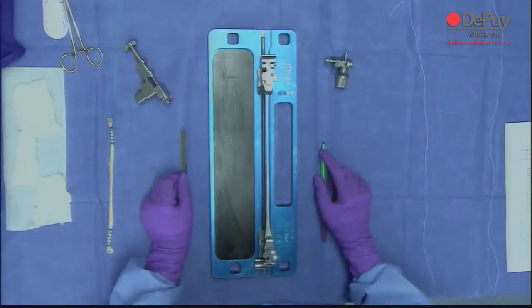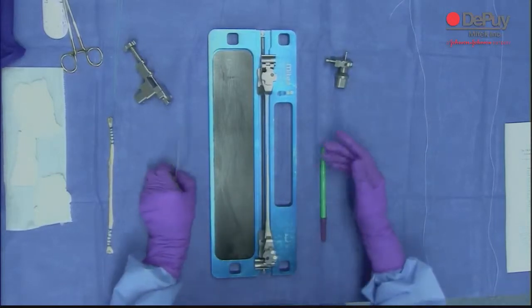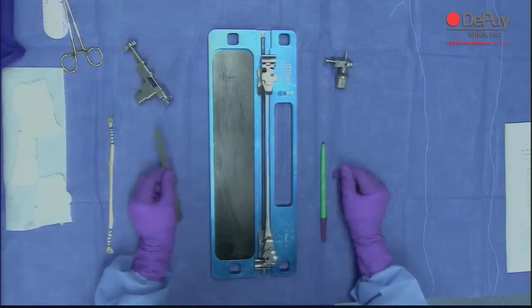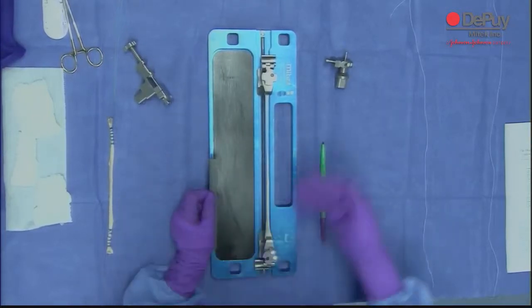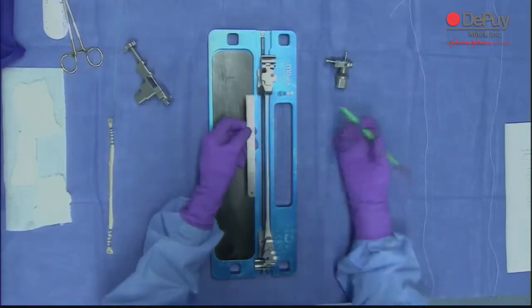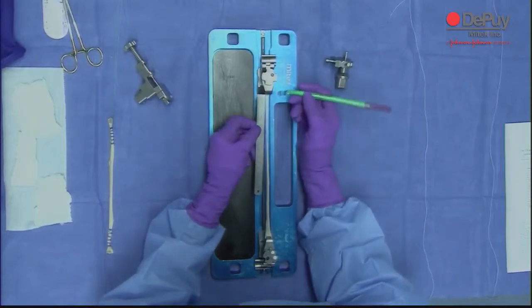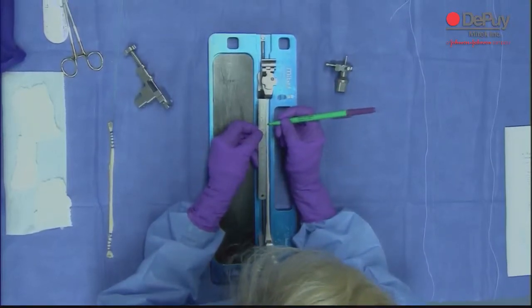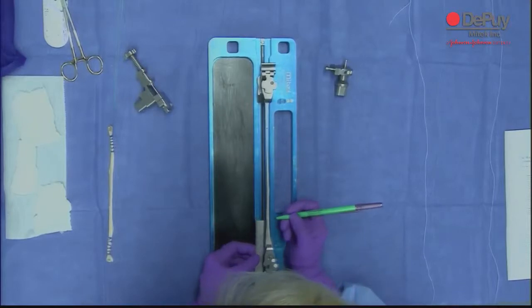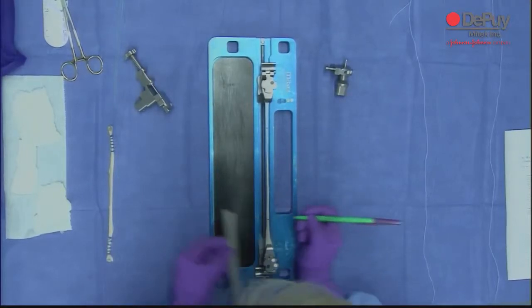I'm here today to show you the modified finger trap suture technique for preparation of the graft. I already prepared one over here. I'm going to show you how to do it here. First thing I do is put the graft on the board, and I'm going to mark 40 millimeters on each end so I have an idea of where to start.